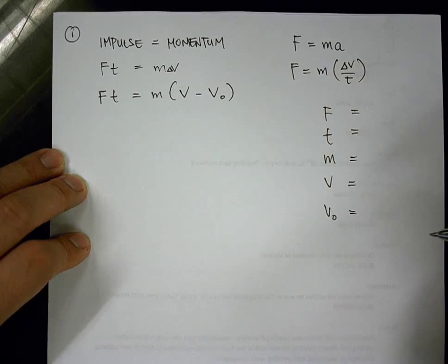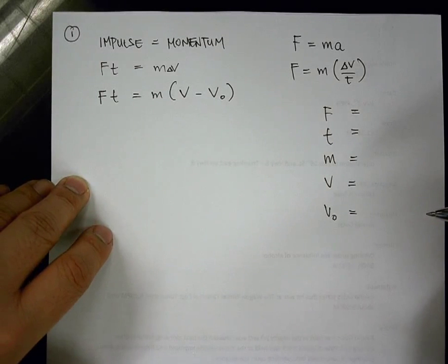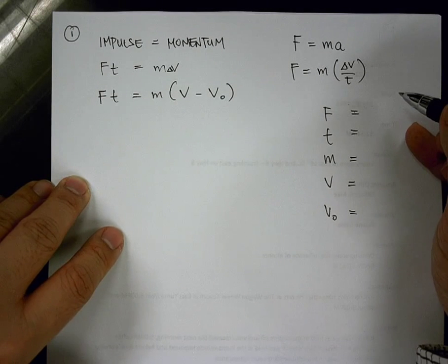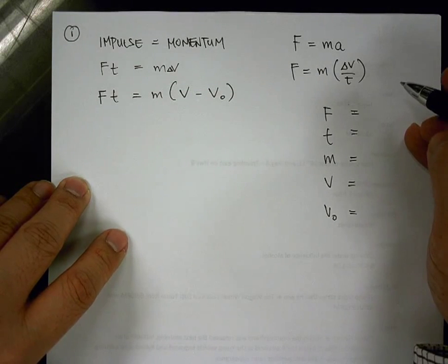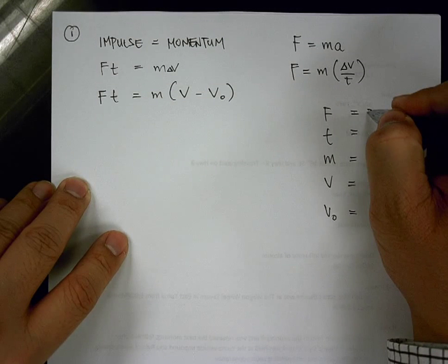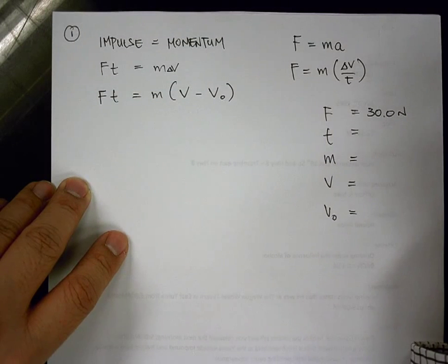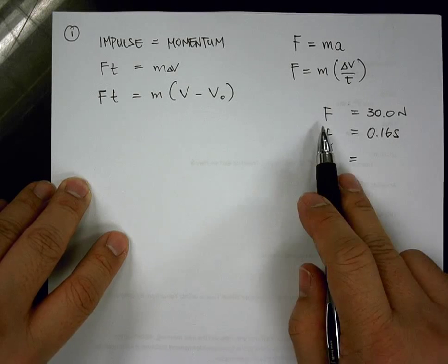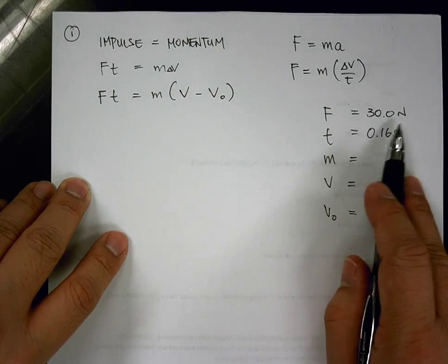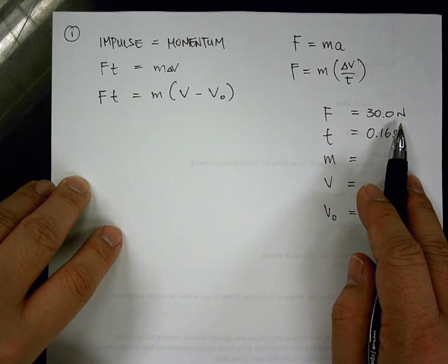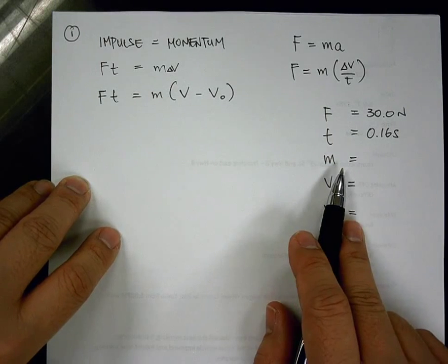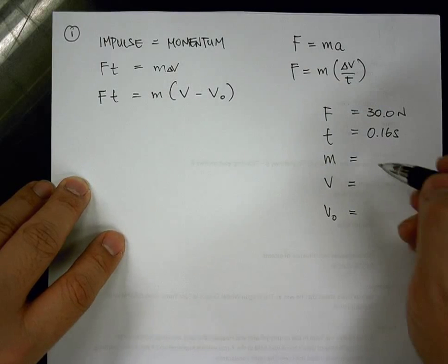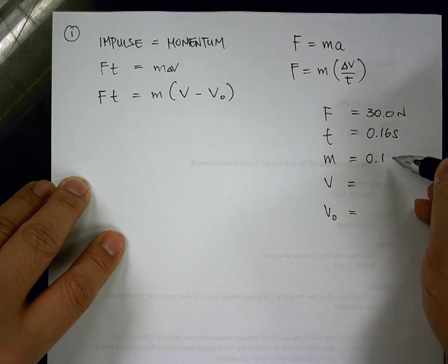And then from our problem, we'll then pick out the variables that we need to list them over here. So do we have a force? Yes. And the force is 30.0 newtons. And then, do we have a time? It's 0.16 seconds. Now, remember, any time that you look at the force variable, always match it to a number with the correct units. Time always measures in seconds. And how about the mass? It measures in kilograms. And the value that we have for mass is 0.115 kilogram.